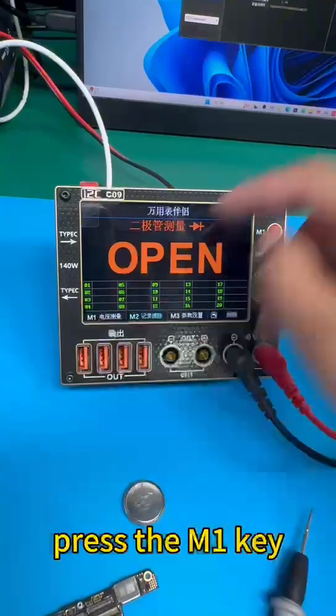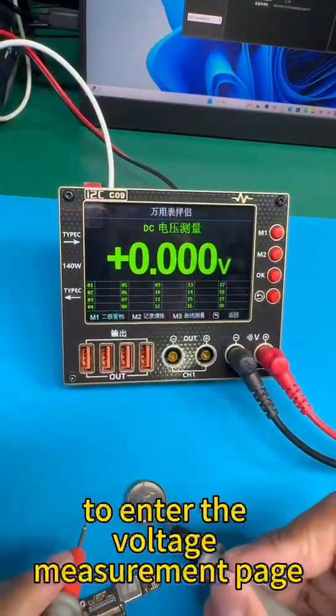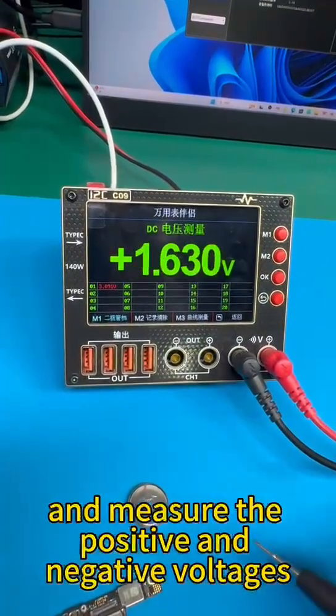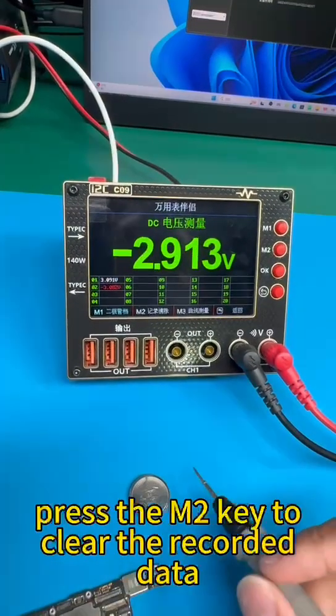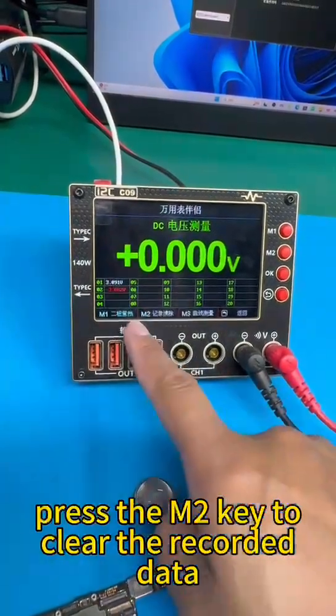Press the M1 key to enter the voltage measurement page and measure the positive and negative voltages. The measurement data will also be recorded. Press the M2 key to clear the recorded data.